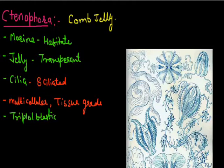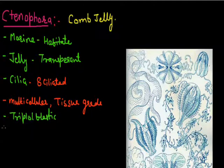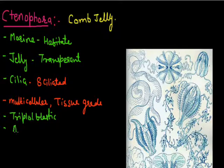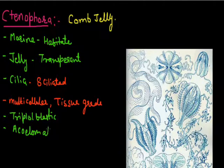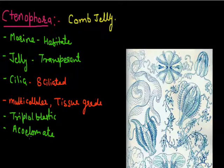The three germ layers are the ectoderm, endoderm, and mesoderm. These animals have no body cavity, so we call them acoelomate, meaning they are without a true body cavity.